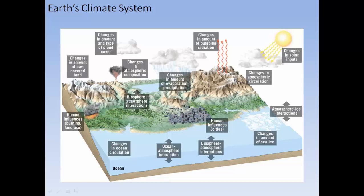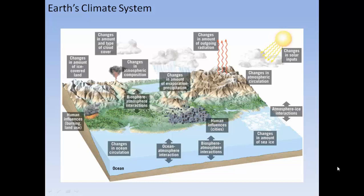The Earth's climate system can be triggered by many different impacts or inputs. There are atmosphere-ice interactions, changes in solar inputs, changes in atmospheric circulation, changes in outgoing radiation, changes in evaporation and precipitation, changes in atmospheric composition, changes in cloud cover, changes in ice-covered land, human influences like burning and land use, changes in ocean circulation, ocean-atmosphere interaction, biosphere-atmosphere interaction, cities, and changes in sea ice. There are quite a lot of variables involved in climate systems.